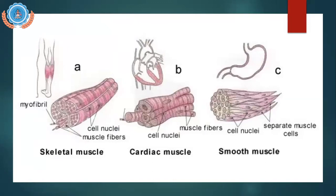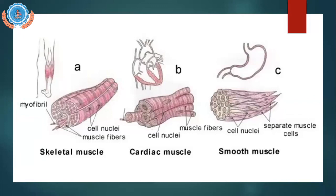If I had you guys in my class physically, I'd give you the diagram where you can actually see how these different types of muscle cells look. In your examination — the BJC — they usually give you a diagram and ask what type of muscle cell it is. So I would spend about two minutes and quickly sketch those diagrams as best you could. It doesn't have to be perfect, but good grades come from being prepared.